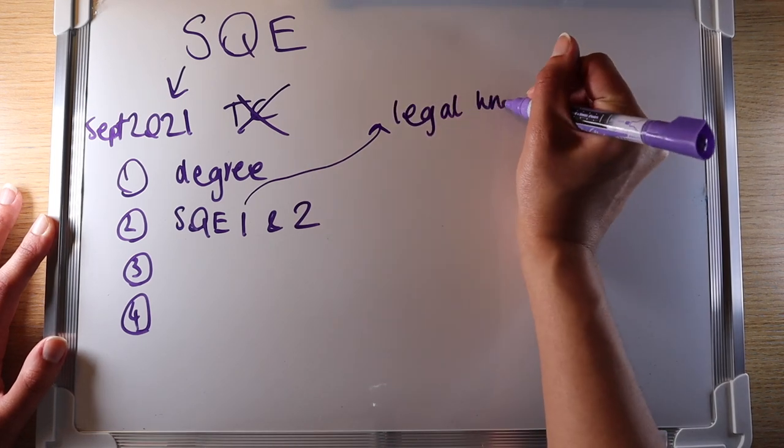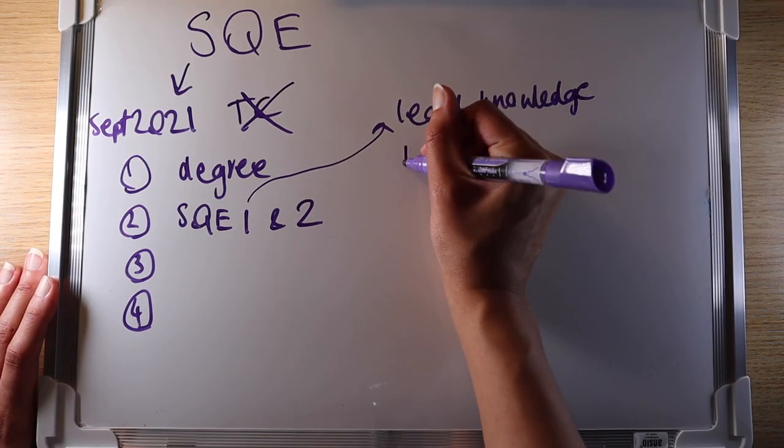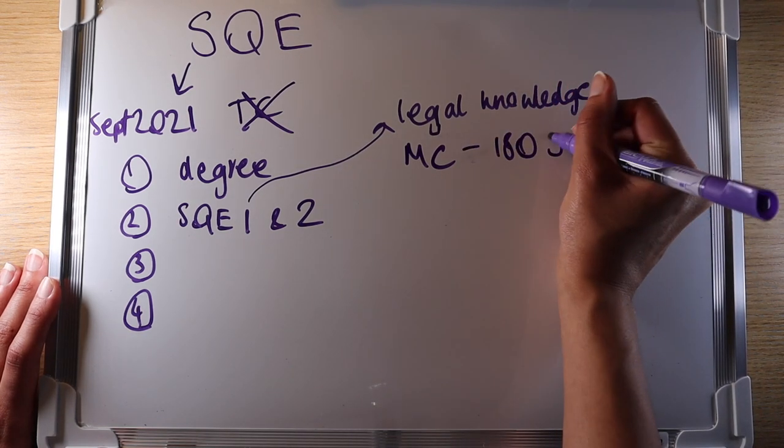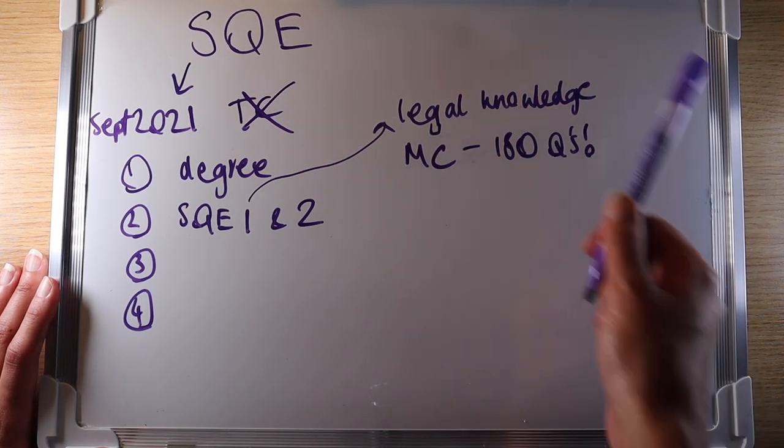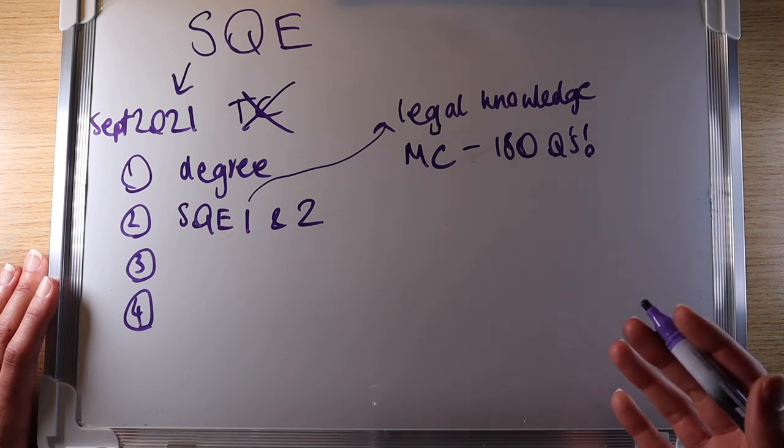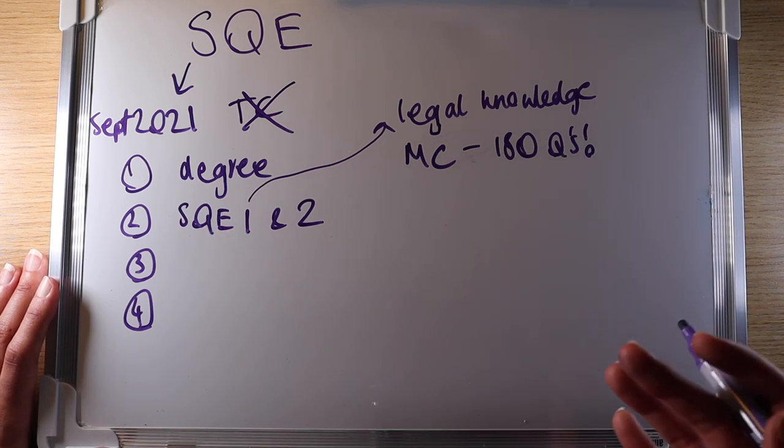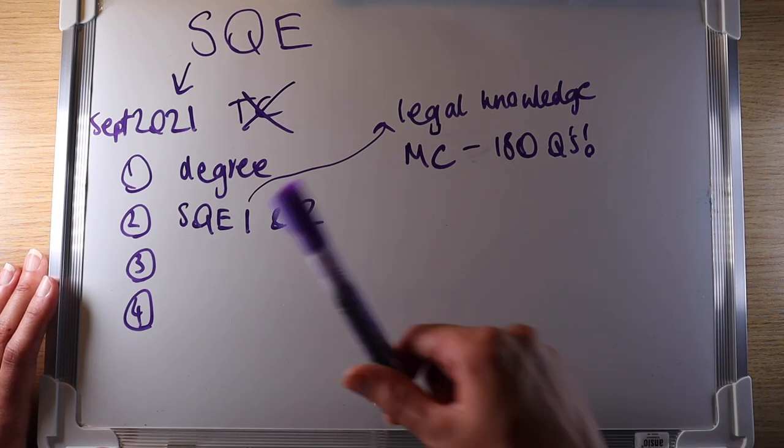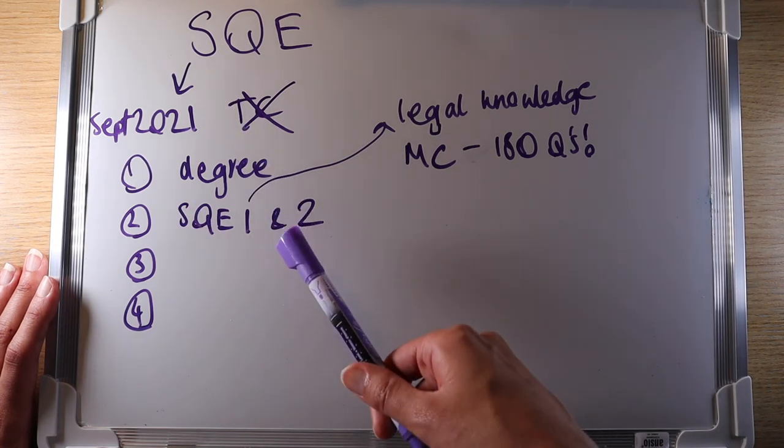SQE 1 is about fundamental legal knowledge and it's a multiple choice paper featuring 180 questions. The content here of what you will learn in SQE stage 1 is very similar to what will usually be learned during a law degree, your GDL and stage 1 of the current LPC. You have to pass SQE 1 to move on to SQE 2.